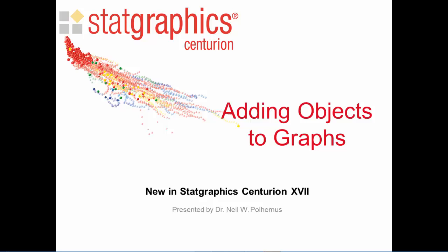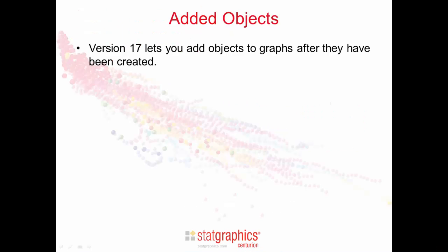This video describes a new feature in StatGraphics Centurion version 17 that allows you to add additional objects to any graph. These objects are added after a graph has been created by pushing a button on the analysis toolbar.